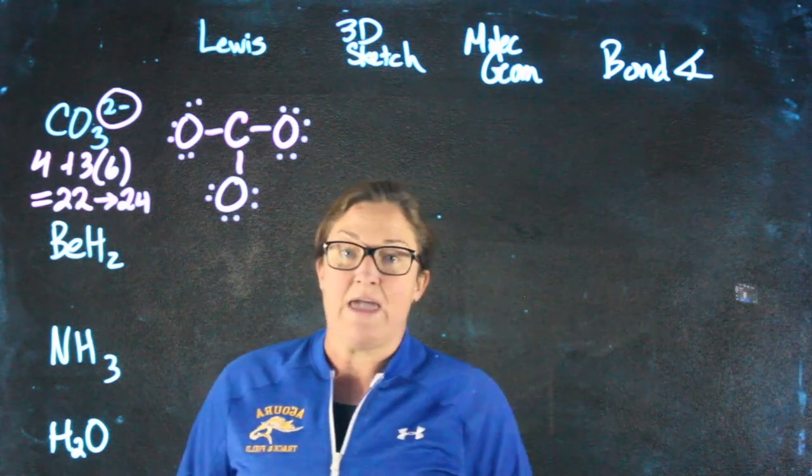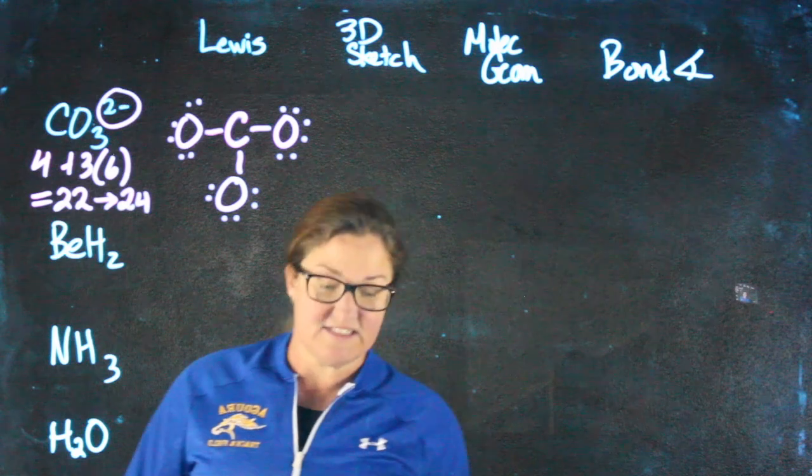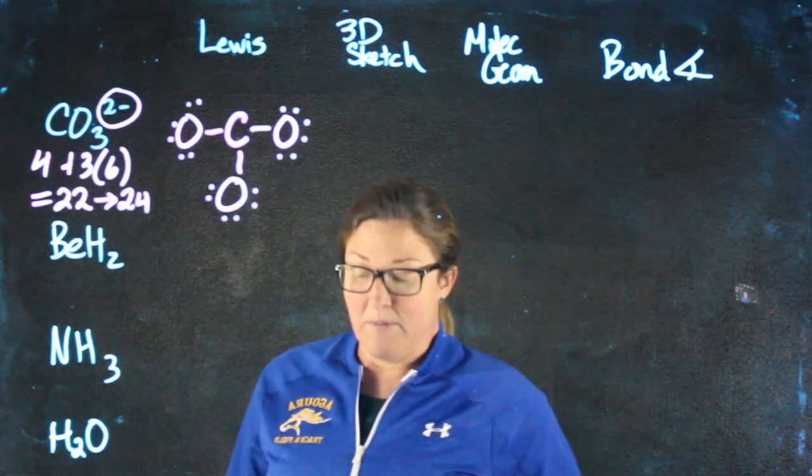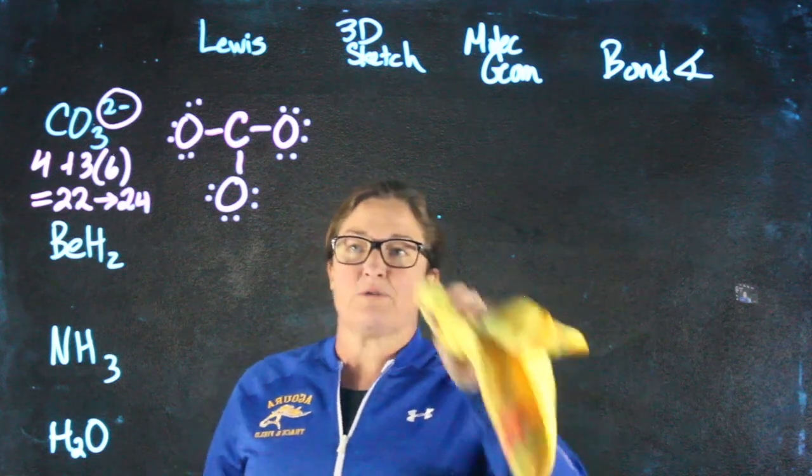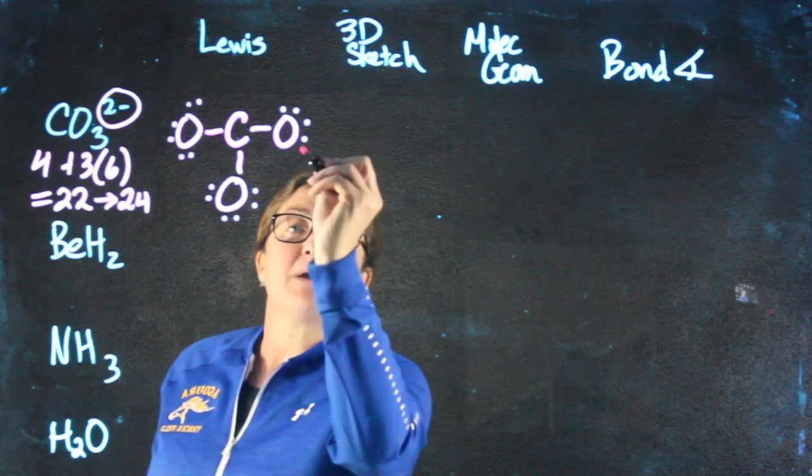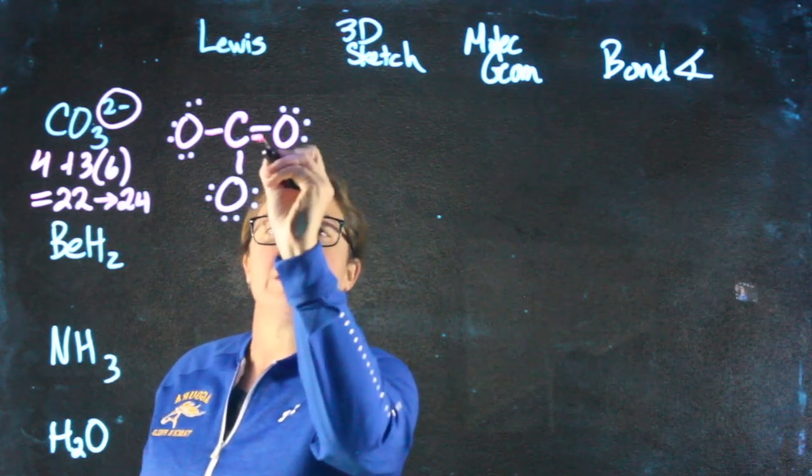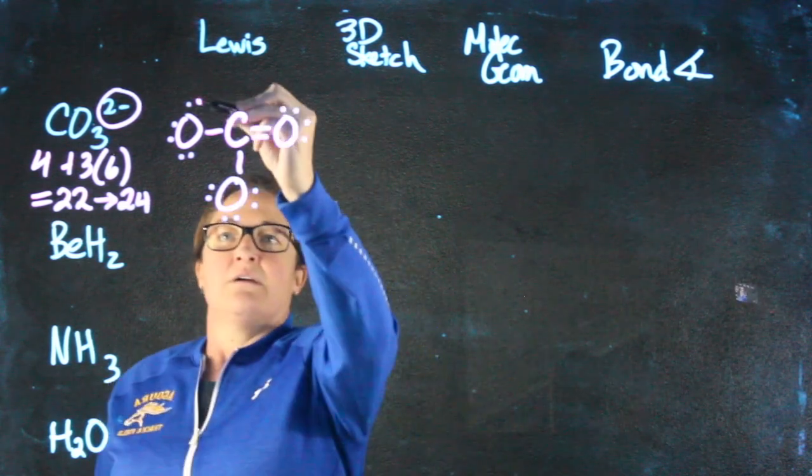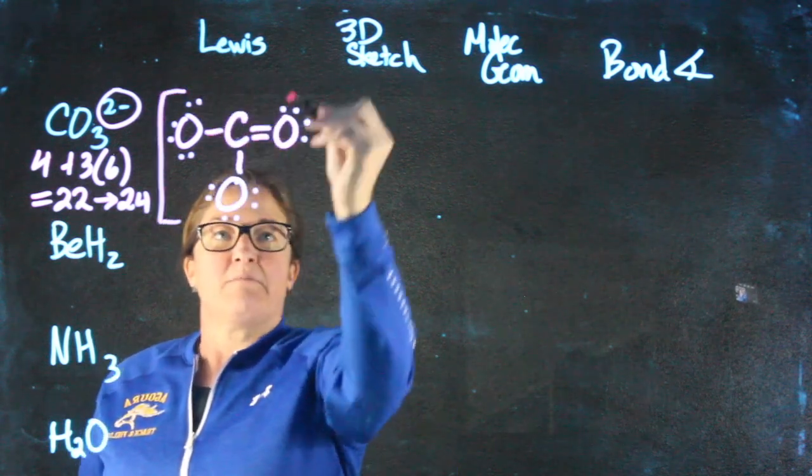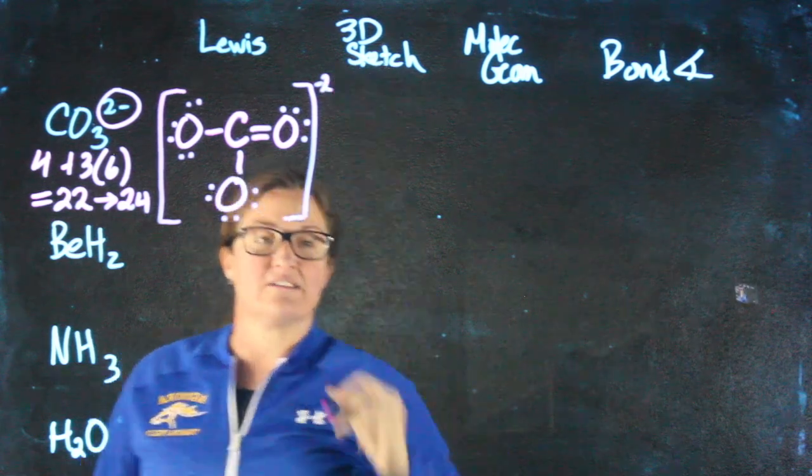All of the oxygens seem to have 8, but carbon doesn't. Carbon only has 6. So the way that I'm going to reconcile that is I'm going to double bond one of the oxygens. I can pick whichever one I want. So I'm going to move those 2 electrons from oxygen into here. Now that Lewis structure is done, I'm going to put brackets on it and indicate the charge as I do with ions.